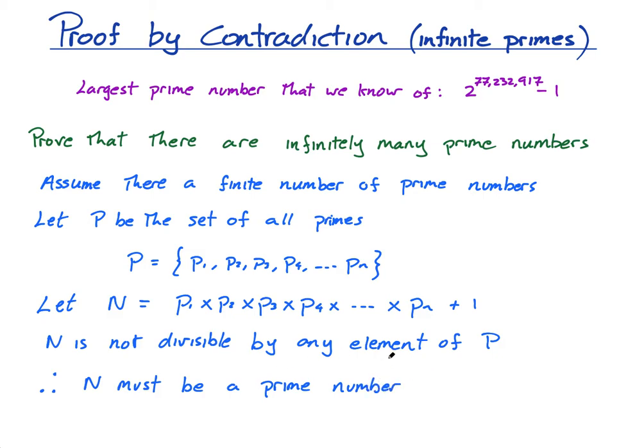Now the reason for that is because, remember what I said, I can write 70 as 7 times 5 times 2. Every single number that is not a prime number can be written as a product of prime factors. So if none of these numbers, if N cannot, if N does not have one of these as a factor, then it has to be itself a prime number.